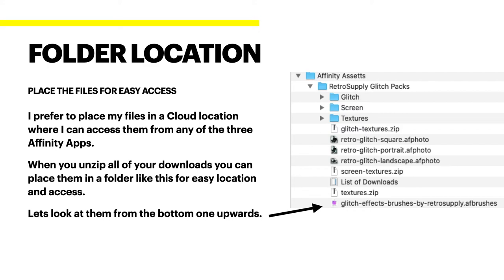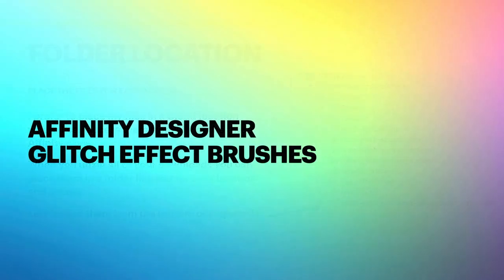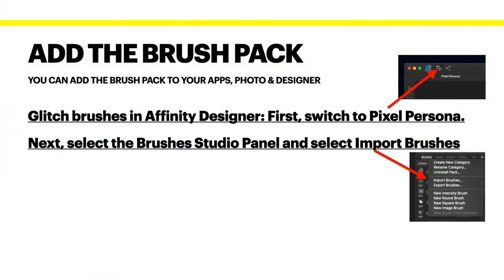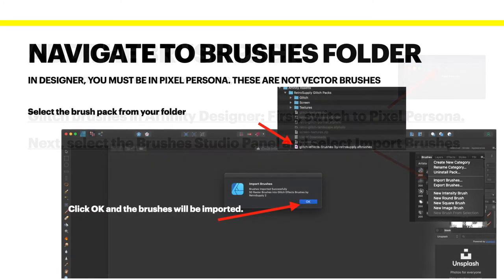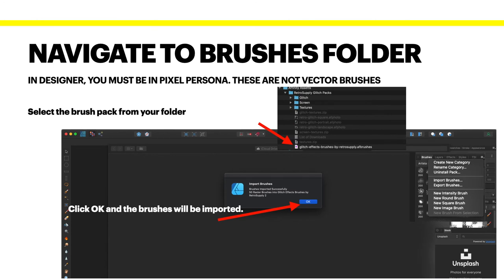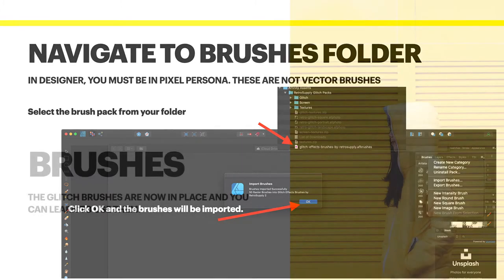Let's look at them from the bottom upwards. The first one I'm starting with is the Glitch Effect Brushes. I'm going to put them in Affinity Designer to start with. When you put them in Affinity Designer, remember that you have to switch to Pixel Persona. These are not Vector Brushes — these are Pixel Brushes. Switch to Pixel Persona, then select the Brushes Studio panel and select Import Brushes. Navigate to where your brushes are and highlight them.